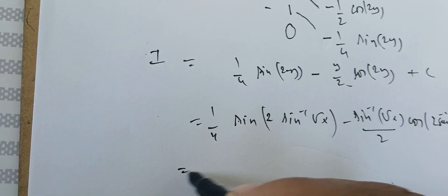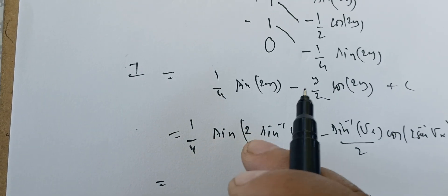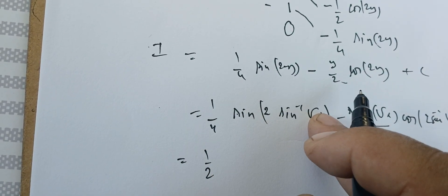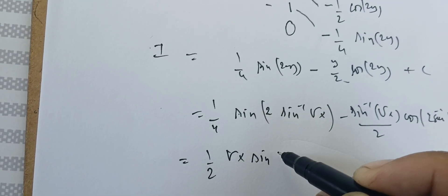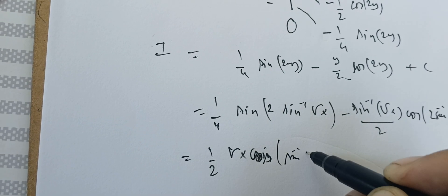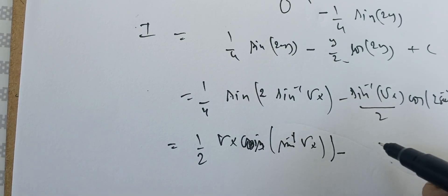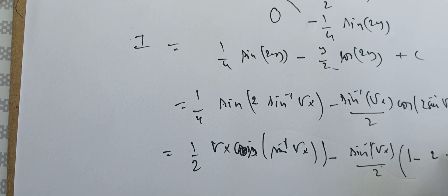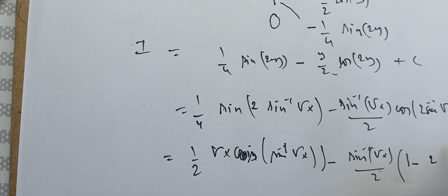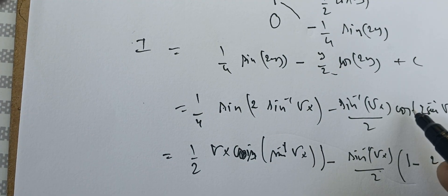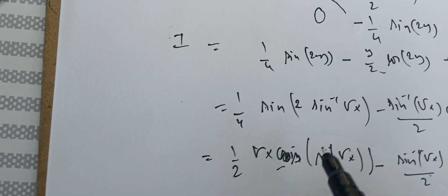Using the double-angle identity sin(2α) = 2sin(α)cos(α), the term sin(2·sin⁻¹(√x)) becomes 2√x·cos(sin⁻¹(√x)), giving a factor of (1/2)·√x·cos(sin⁻¹(√x)). For the cosine term, we use cos(2α) = 1 - 2sin²(α), so cos(2·sin⁻¹(√x)) = 1 - 2x.